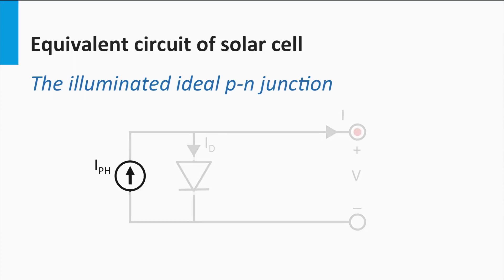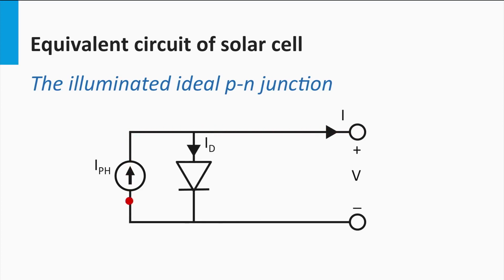The electrical symbol of a current source is a circle with an arrow. The arrow points in the direction of positive current, meaning the vast majority of electrons in this equivalent circuit travel through the current source in the opposite direction of the arrow. The current generated by the light is I_pH, where pH stands for photo. Note that the photocurrent is in the opposite direction of the forward current of the diode.